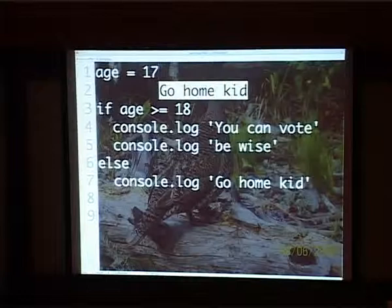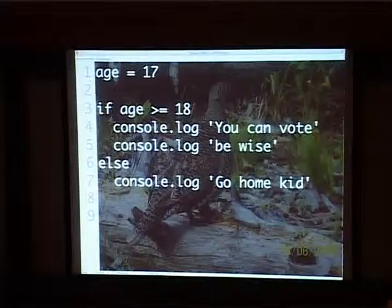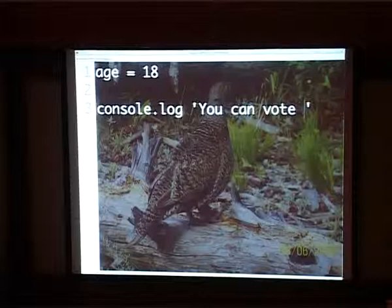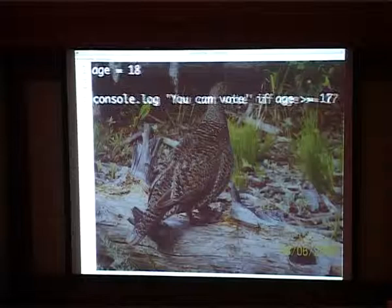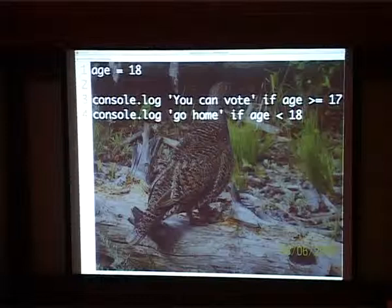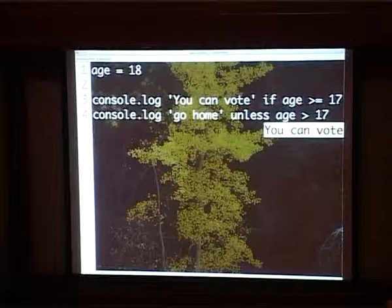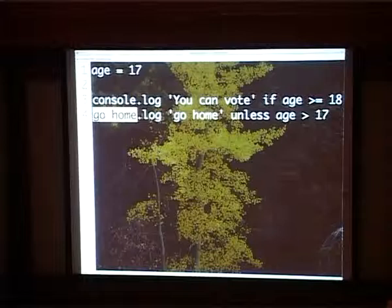But you can also prefer a bit of conciseness. For example, I could say console.log 'you can vote' if age is greater than or equal to 17. And I can also say 'go home' if age is less than 18. Or you can say 'unless age is greater than 17.' So you can say some code and then put if or unless — there's a bit of conciseness you can make use of.